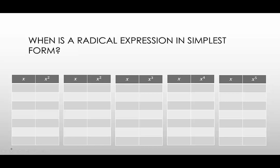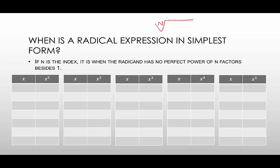So when is a radical expression in simplest form? If n is the index, recall that if we have a radical, n is the number that's wedged in between, like the little checkmark. If there is no number, then it's assumed to be an index of 2 or a square root.